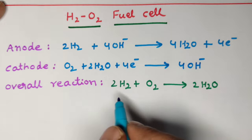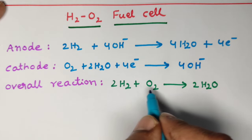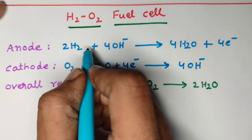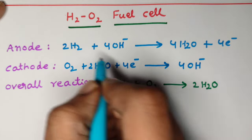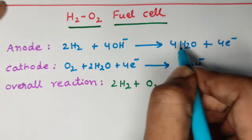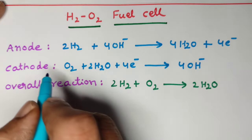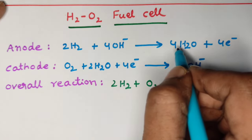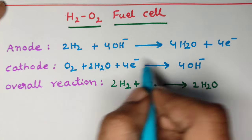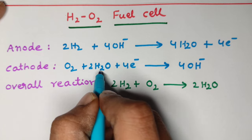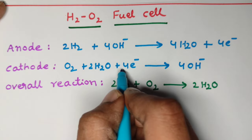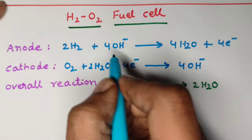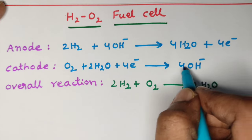To summarize: the overall reaction is 2H₂ + O₂ → 2H₂O. At the anode, 2H₂ reacts with four OH⁻ ions to give four moles of water and loses four electrons. At the cathode, O₂ gains those four electrons; two moles of water are written on the left side to cancel, and four OH⁻ ions are written on the right side.